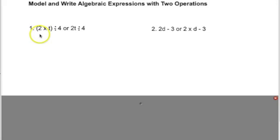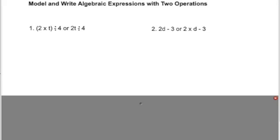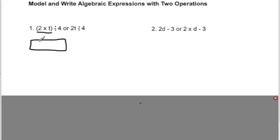If we look at this first example: 2 times t divided by 4. Remember we can also just say 2t divided by 4, because 2t also represents multiplication. From algebraic expressions with one operation, we only need to focus on one operation at a time. So we focus on this part — 2 times t. When we represent that in a model, 2 times t means t is shown two times, so we have a t on this side and a t on this side. This part of the model is 2t, or 2 times t.